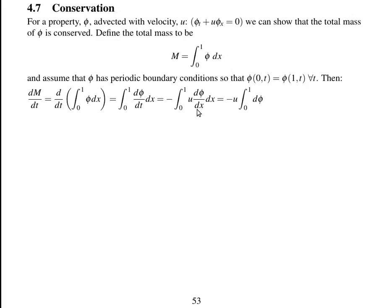We can cancel out the dx's, and we can take u — which we assume to be constant — outside the integral. Then we get the integral between zero and one of d phi, which is just phi evaluated at the boundaries: minus u times phi at one minus phi at zero. We know we have periodic boundary conditions, so this is equal to zero. So the rate of change of mass with time is zero — mass is conserved.